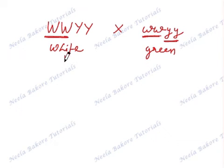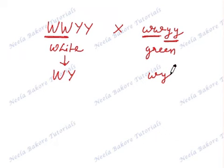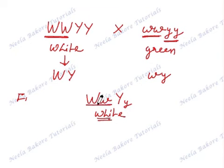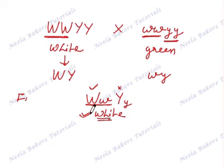The gametes produced by the white fruit colored plant would be with capital W and Y — all four gametes. In case of the green plant, it is going to be both recessive genes. So in F1, that is the first generation, all 16 offspring would be heterozygous for both genes. Phenotypically, they are all going to be white, because the epistatic gene W is in its dominant stage — though it is heterozygous, it is dominant — so it does not let the expression of Y take place.